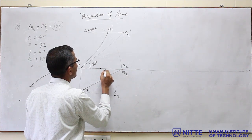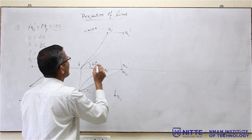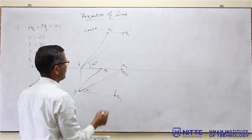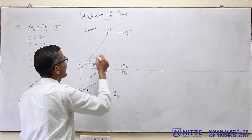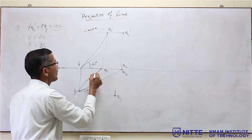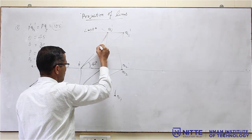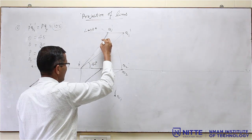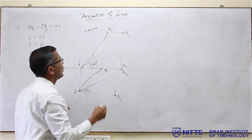Similarly, P as center with PQ1 as radius, draw an arc to cut the XY line — because the XY line itself is the locus. This becomes point Q. Join PQ by a straight line. If the construction is right, P and Q will be in the same vertical line. This is the top view PQ and the front view P dash Q dash — both as dark lines.